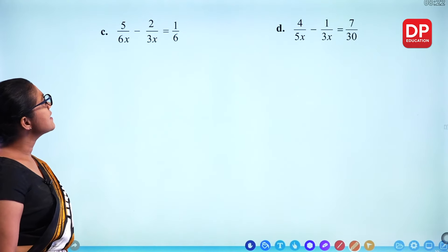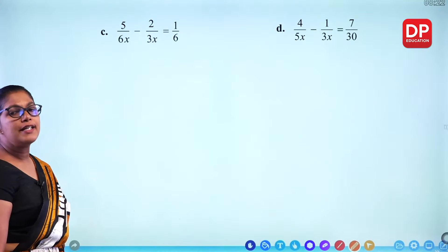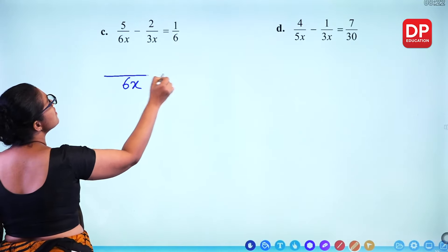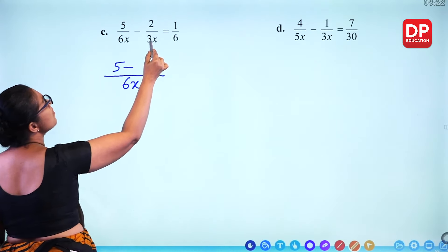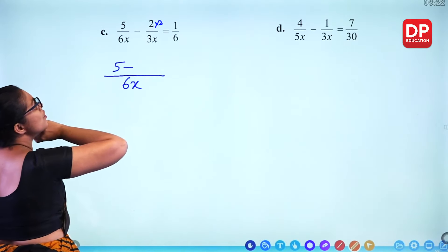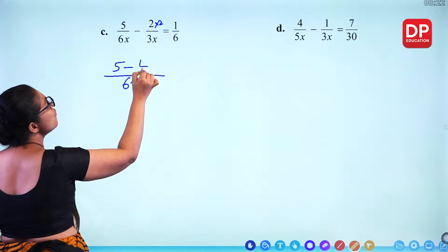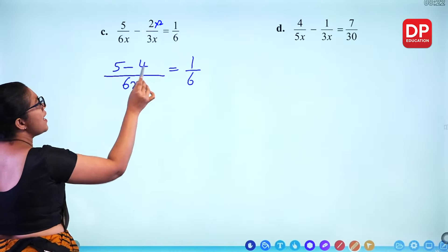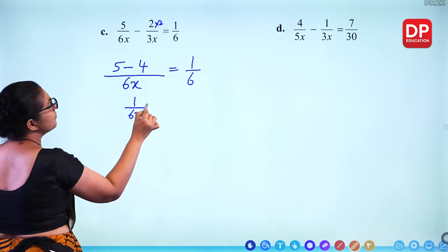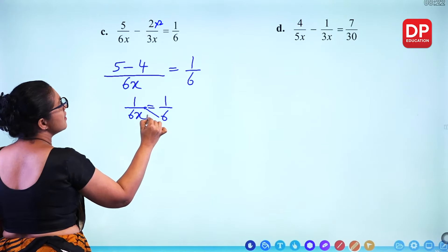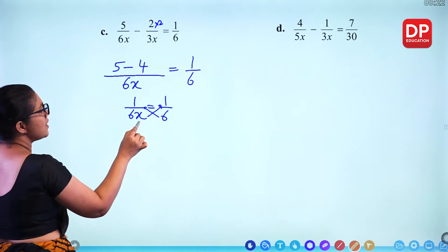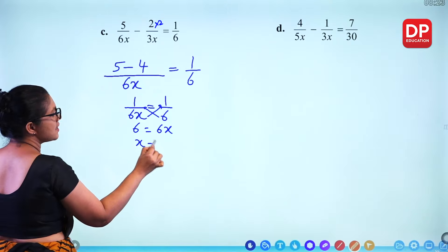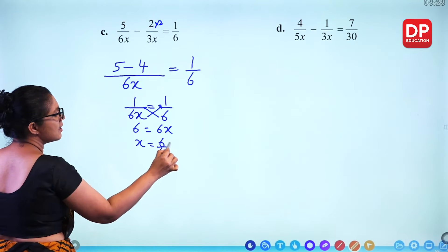Part C: denominators are 6X and 3X. The LCM is 6X. The first fraction stays as 5/6X. Multiply the second by 2: 2 times 2 is 4, so 4/6X. Then 5 minus 4 over 6X equals 1/6. Cross multiply: 1 times 6 is 6, and 1 times 6X is 6X. So X equals 6 divided by 6, which is 1.